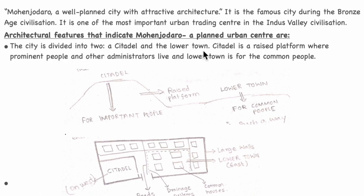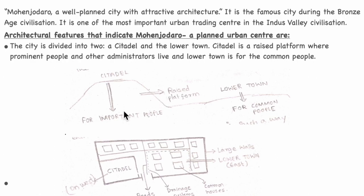The city is divided into two parts: the citadel and the lower town. The citadel is a raised platform where prominent people and administrators lived, while the lower town was for common people. I have drawn diagrams illustrating this — the raised platform for important people and the lower town for common people.